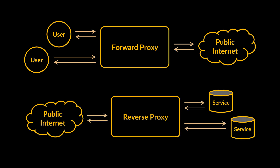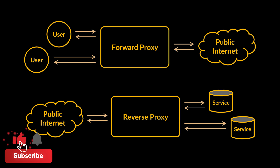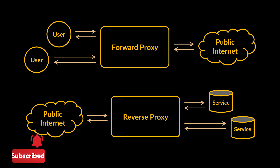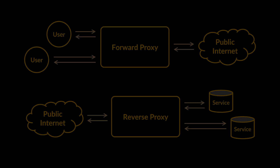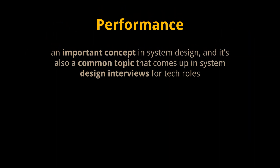On the other hand, a reverse proxy sits between the public internet and a pool of servers. Because of their location in the system, reverse proxies can provide several services including load balancing, caching, filtering requests, attack prevention, etc. For example, if a company wanted to expose a public API for querying data but not modifying it, they could filter out any non-GET requests before passing them to the servers that generate the responses.